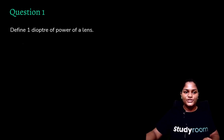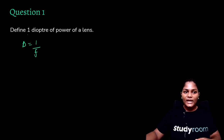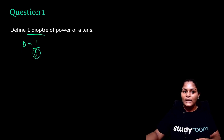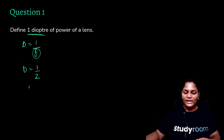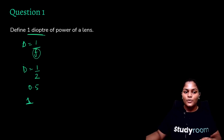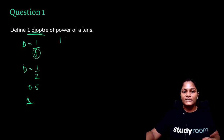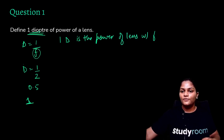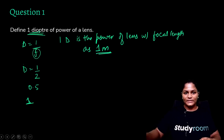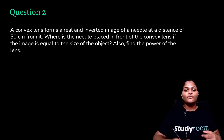Question: Define one diopter. Power P = 1/f. To get P = 1 diopter, we set f = 1 meter. So one diopter is defined as the power of a lens with focal length of 1 meter.